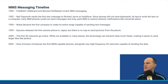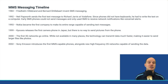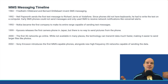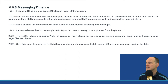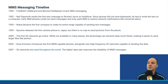Then in 2002, Sony Ericsson introduces the first MMS-capable phones — that's when we're actually doing MMS via a phone — along with a high-frequency 2G network capable of actually sending the data. So the network had to be just as compatible as the ability for the technology to send the picture in the first place. Everything sort of works together. In 2007, 3G networks are now used throughout the world, and the higher data rate improves the reliability of MMS messages.